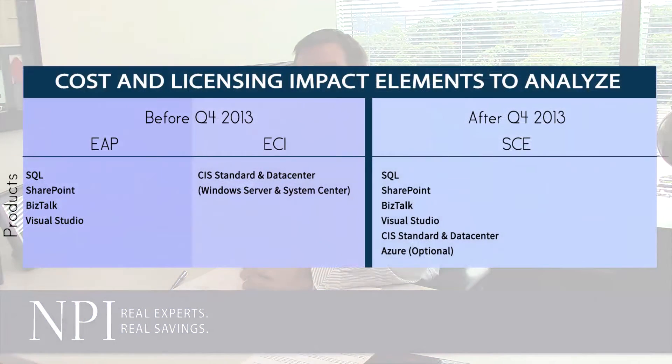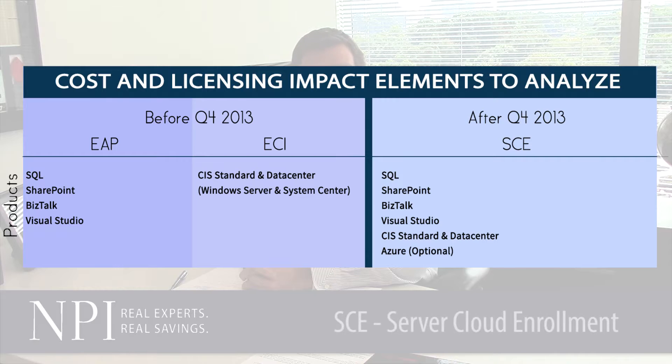EAP includes products like SQL, SharePoint, and BizTalk Server, and programs like ECI include Windows Server as well as System Center. The changes that are coming into effect are going to basically remove these two enrollments from the Enterprise Agreement program and replace it with a new one called Server Cloud Enrollment or SCE.